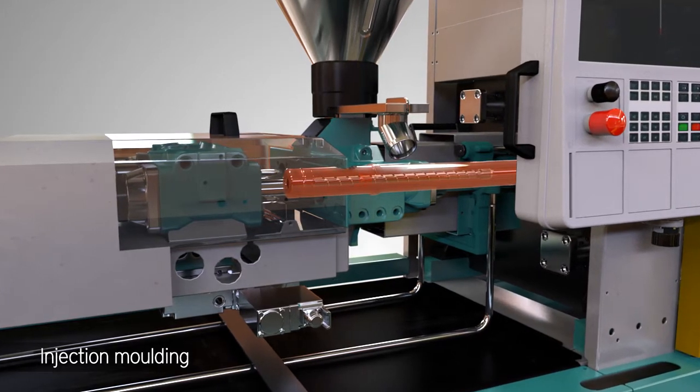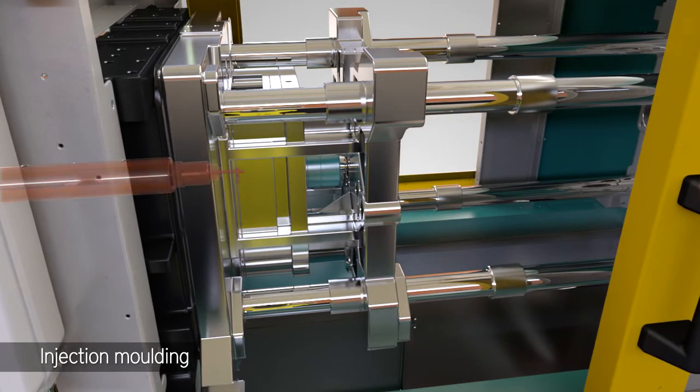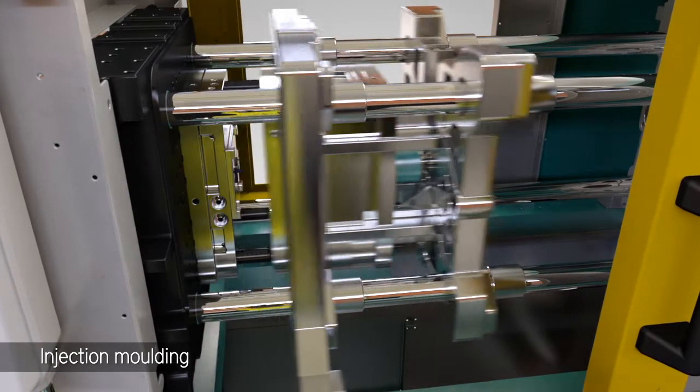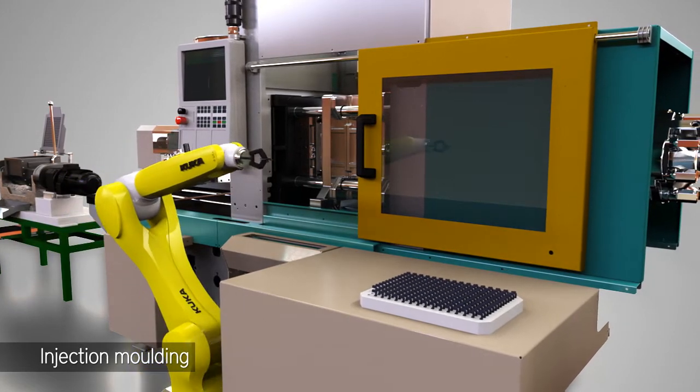The liquid mix is then injected into a mold where it cools down and hardens. After the object is hardened it is removed from the mold. These objects are referred to as green parts.